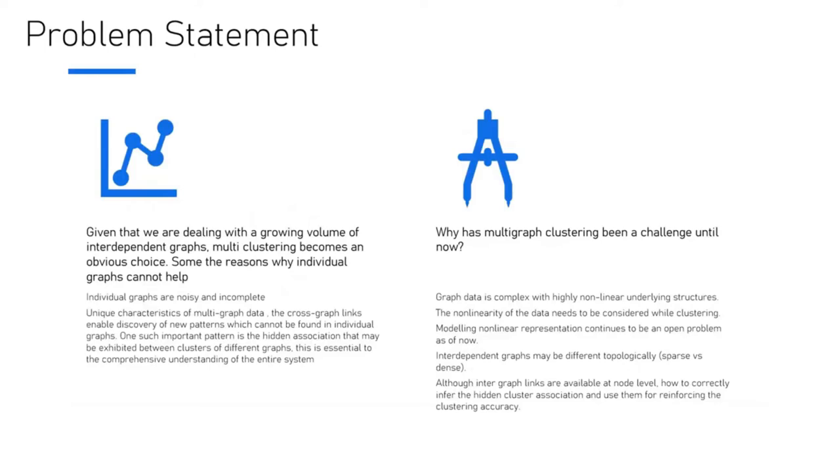The problem statement: why has multi-graph been a challenge so far? Graph data is complex with non-linear underlying structures. The non-linearity of the data needs to be considered well when clustering. Modeling non-linear representation has been a problem. Between January 2020 and now, there are some more papers which came out on multi-graph clustering with different techniques. Inter-dependent graphs will be different, sparse versus dense, and although inter-graph links are available at node level, how to pair them for hidden clusters to reinforce clustering accuracy remains challenging.